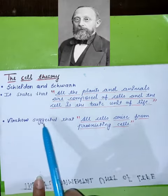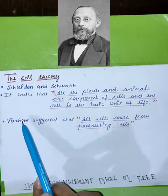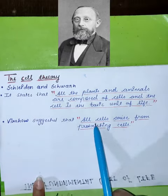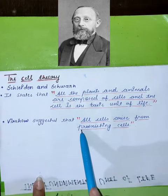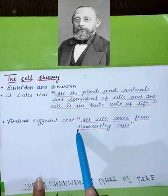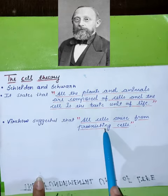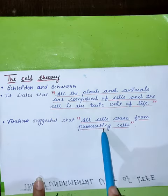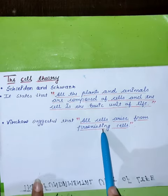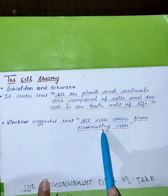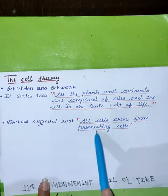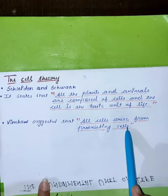Virchow suggested that all cells arise from pre-existing cells. Pre-existing means already existing cells — the first cells that are present from which new cells arise.